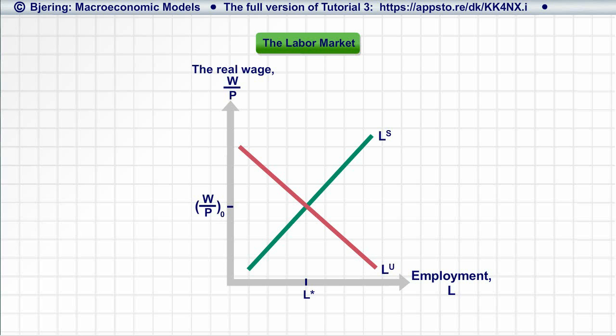It appears that there is labor market equilibrium at the real wage W over P sub-zero and employment L-star. We call equilibrium employment structural employment.